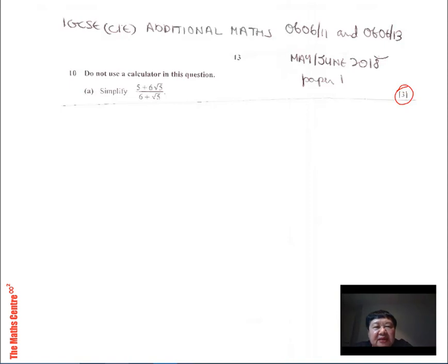So they say simplify 5 plus 6 root 5 over the denominator 6 plus root 5. If you're going to rationalize the top and bottom, you must multiply by the same term, which if the bottom is 6 plus root 5, you just multiply by 6 minus root 5, both the top and the bottom.